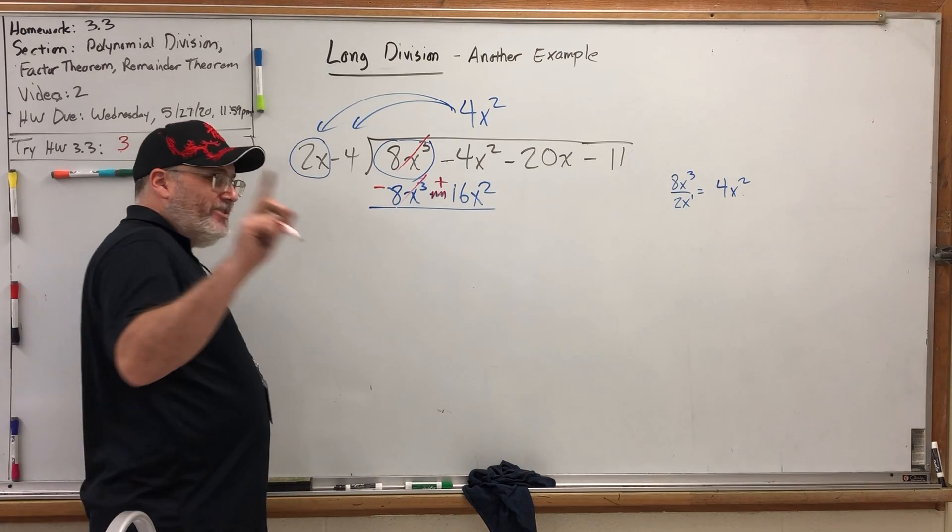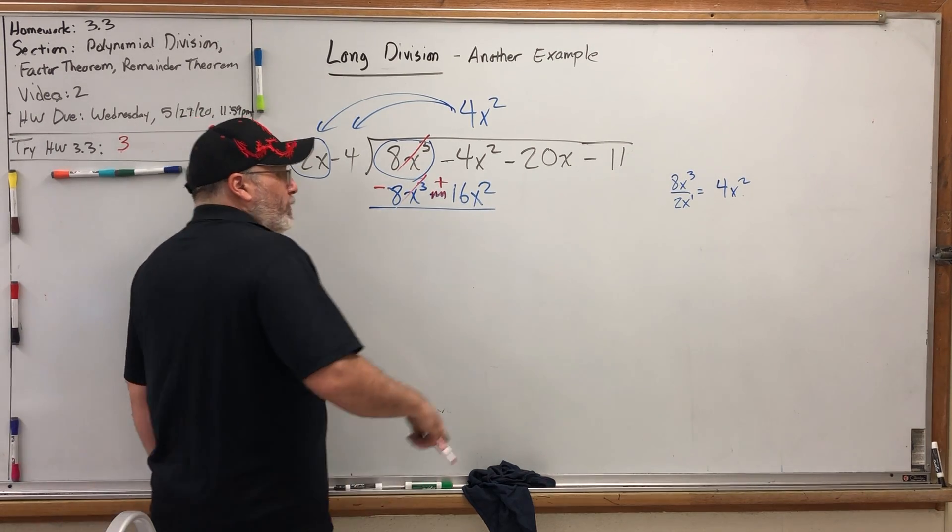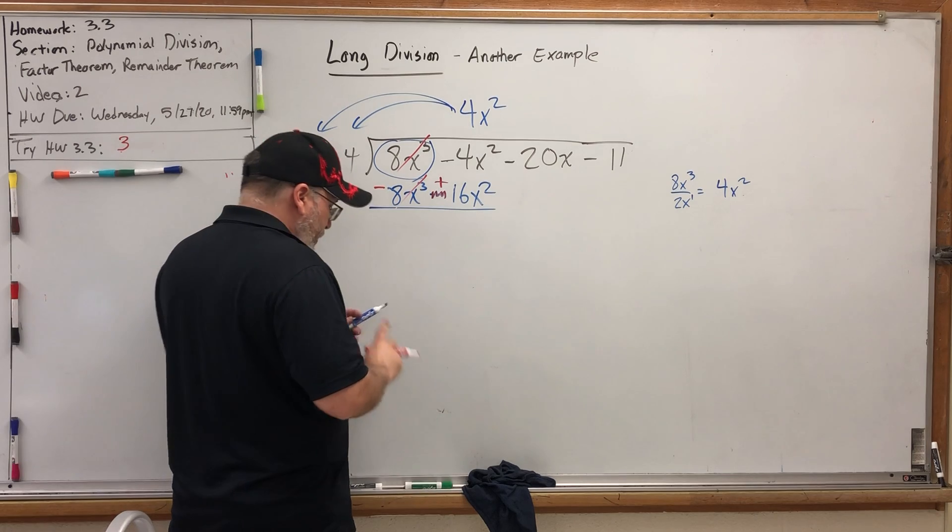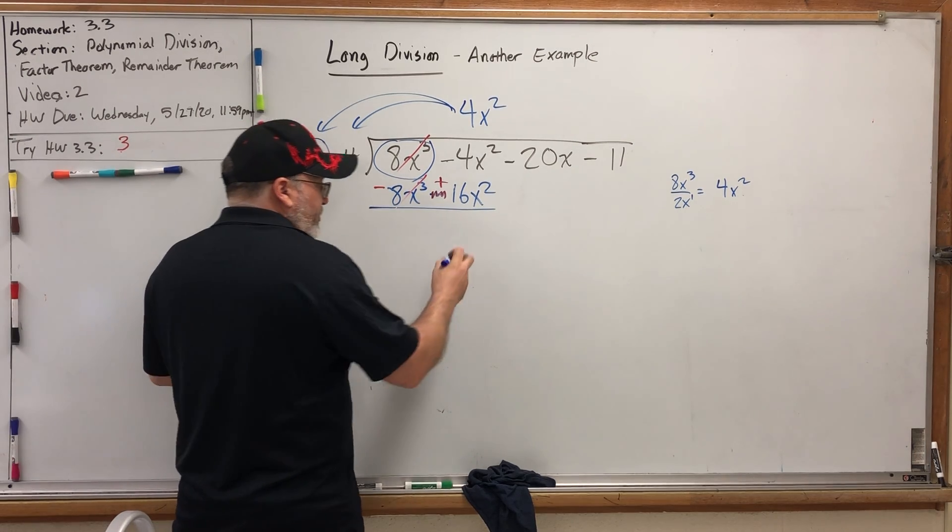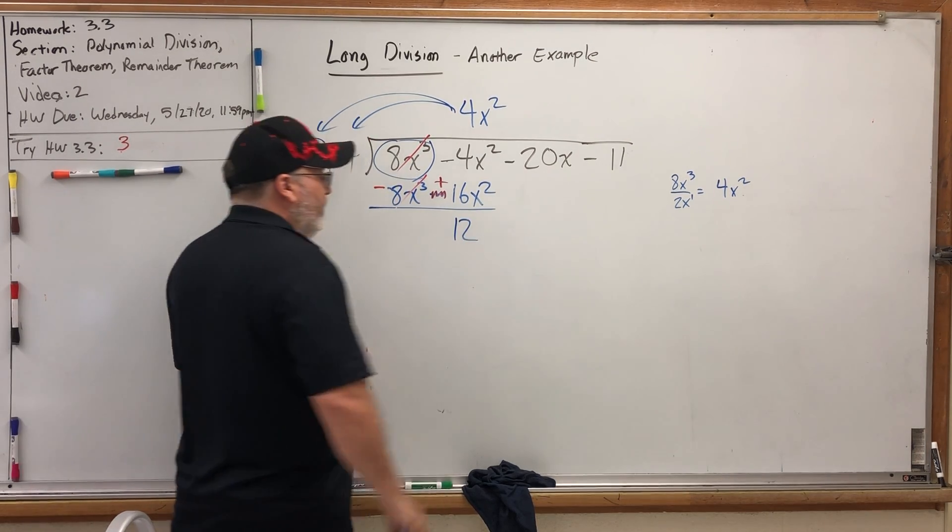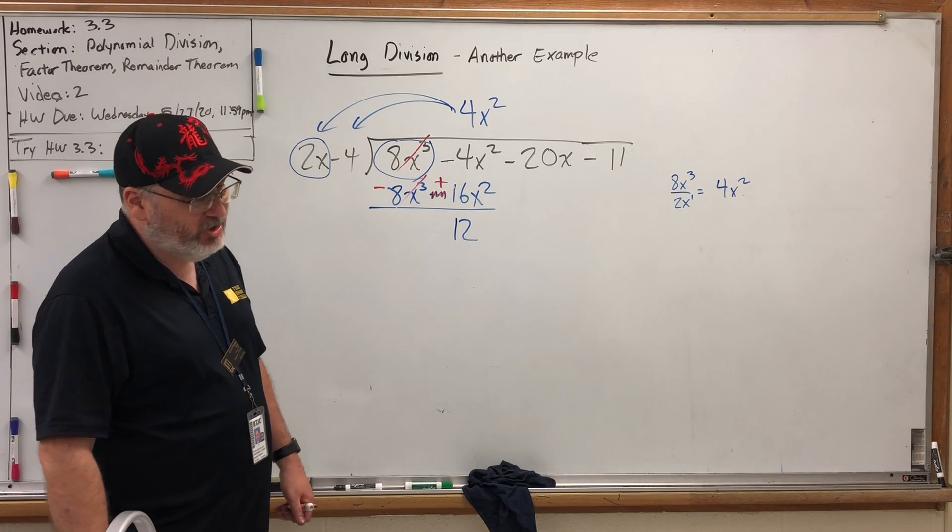And now let's combine. Leading terms cancel. That was designed to happen. And when we combine -4x² and 16x², -4 and 16 is 12. More specifically, -4 and positive 16 is a positive 12.